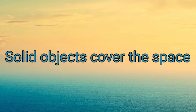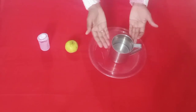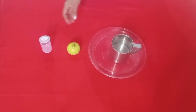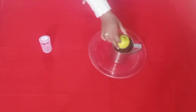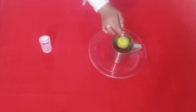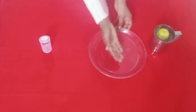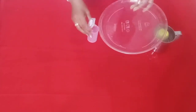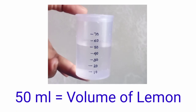Let's see how much space the lemon covers. To know this, we take a plate, a mug full of water, a lemon, and a gauge. I have kept the mug in the plate, and now I am putting the lemon in the mug. When we put the lemon in the mug, some water came out. Let's measure that water by pouring it into the gauge — there is 50 ml of water. The water which came out of the mug is the volume of the lemon.